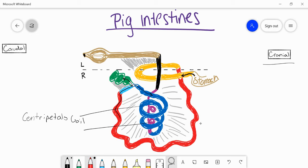The centrifugal coil, which is what's on the inside. But it's a combination of both of these coils that creates the ascending colon.